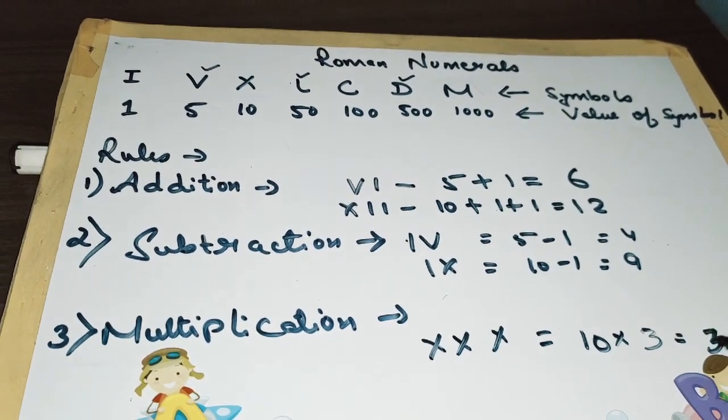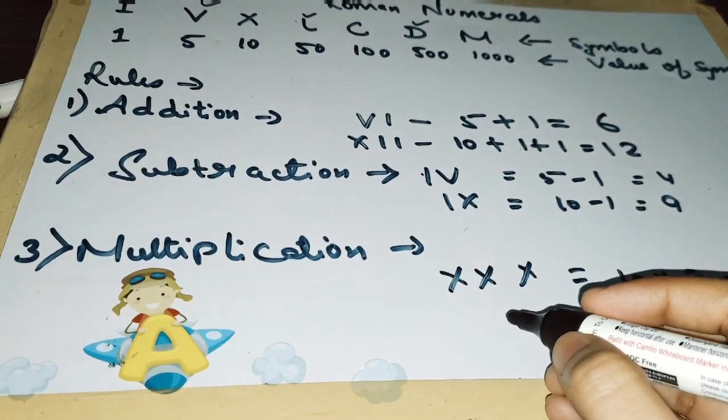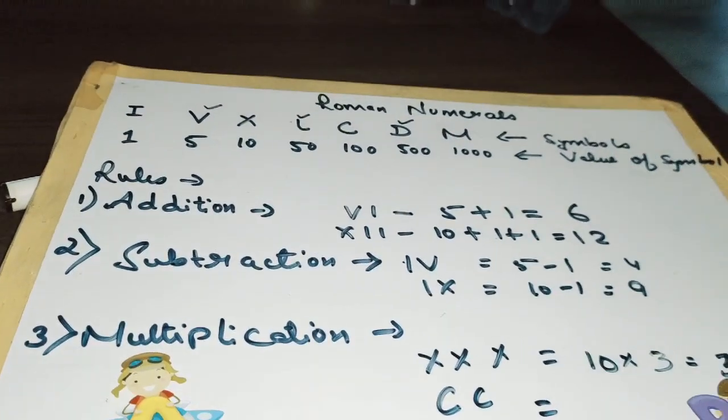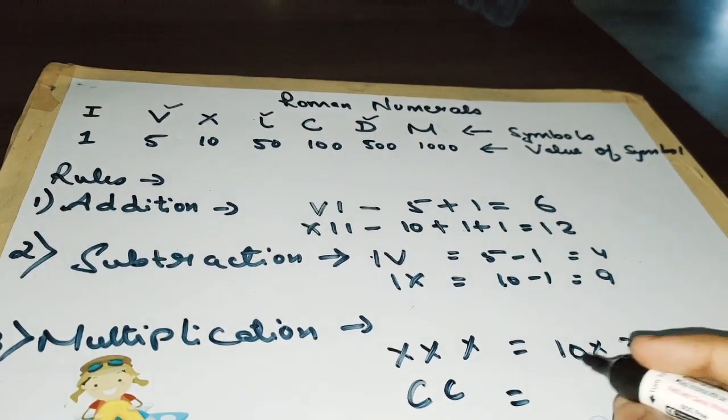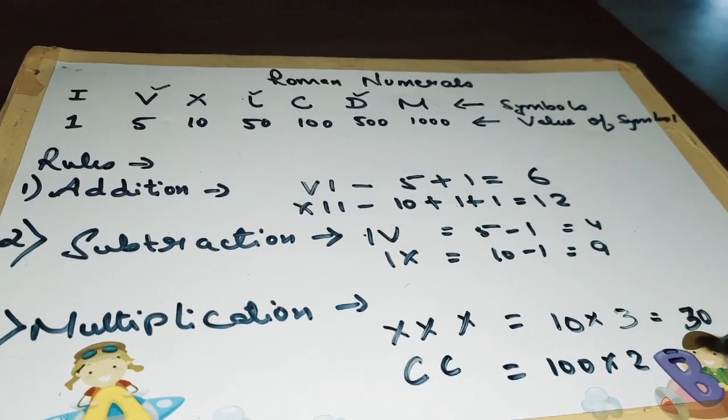Now coming to the next one, let me take this example. As you can see, C value is 100, and there are 2 C's, so we will multiply it 2 times, so it will be 200.